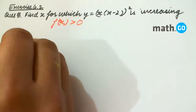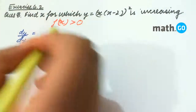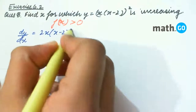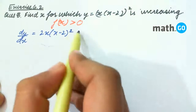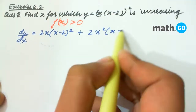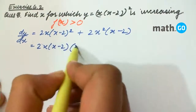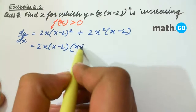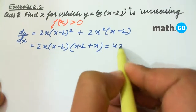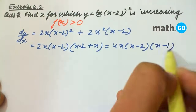So dy/dx, using the product rule, equals 2x(x-2)² plus 2x²(x-2). Taking (x-2) common, we are left with 4x(x-2)(x-1).